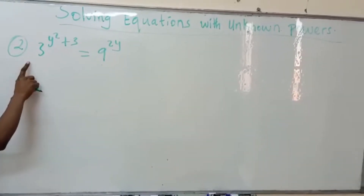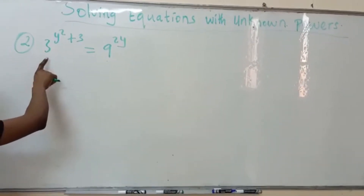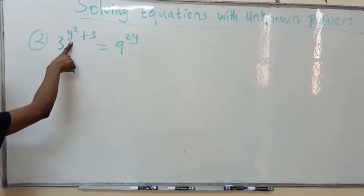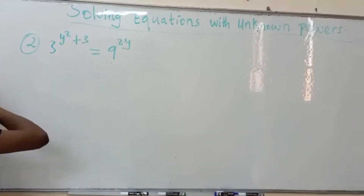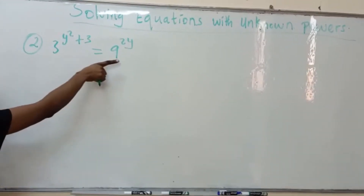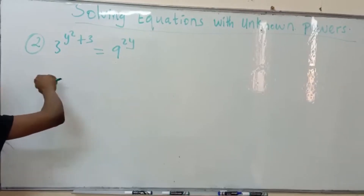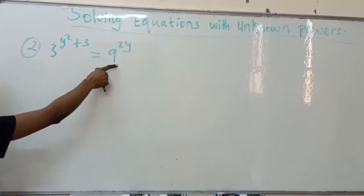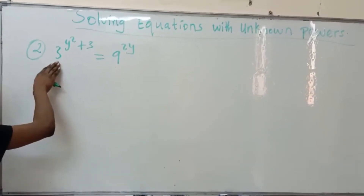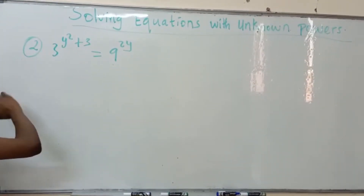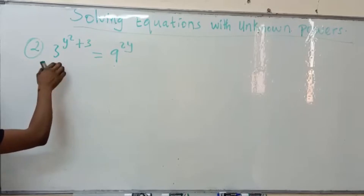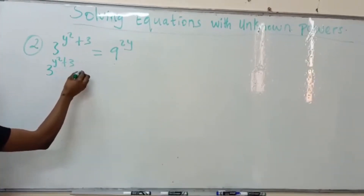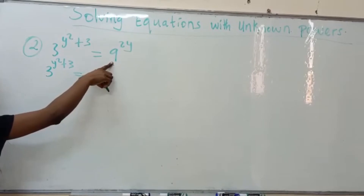Okay, number 2. We are going to simplify and look for y — the root of y. We look at the left and right hand side. We see that 3 has the lowest base, so the right hand side must have the same base as the left hand side. We have 3^(y² + 3) equals 3 raised to power 2, which gives 9.